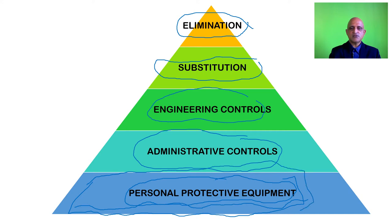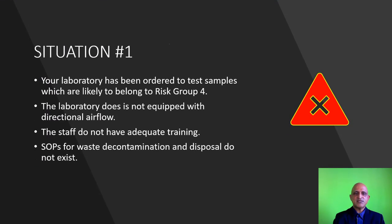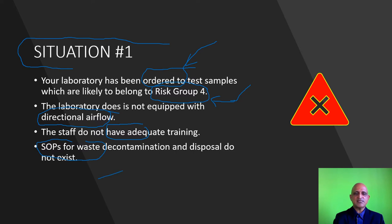The first control is elimination. Consider this situation: your laboratory has been ordered to test samples likely belonging to risk group 4 — for instance, during a pandemic. However, your laboratory is not equipped with directional airflow, you do not have a containment facility, the staff lack adequate training, and SOPs for waste decontamination and disposal do not exist. With these multiple limitations, a breach of containment is highly likely, and in this case we resort to elimination — a collective decision not to proceed with the laboratory procedure.